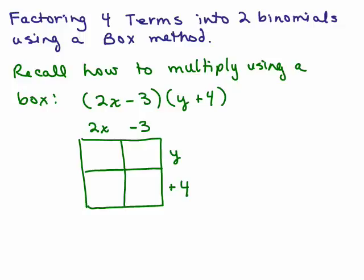Let's say we had 2x minus 3 times y plus 4. Remember we draw a little box here, and then we have across the top the 2x minus 3, a space for each term, and along the side y plus 4. So we do 2x times y is 2xy, negative 3 times y is negative 3y, 2x times 4 is plus 8x, and negative 3 times 4 is negative 12.